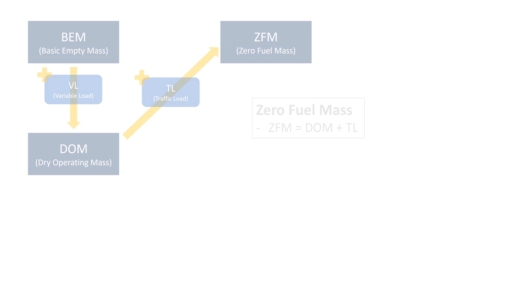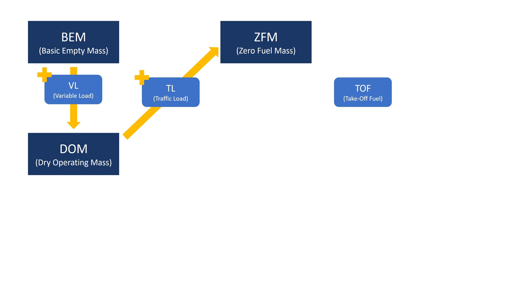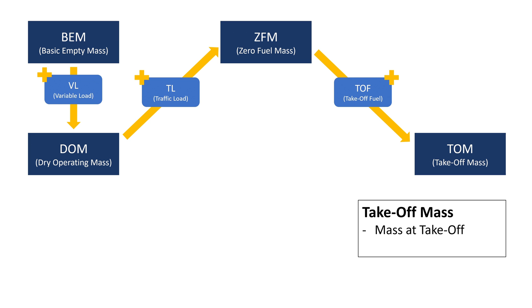But aircraft do need fuel, so that's where the takeoff fuel comes in. It is the amount of usable fuel on board at takeoff. And if we add that to the zero fuel mass, we arrive at the takeoff mass, defined as the mass of the entire airplane at the point of brake release for takeoff.